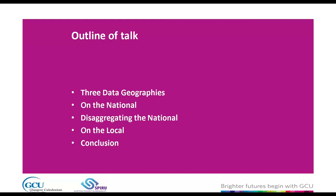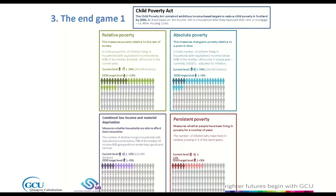Hannah mentioned that the driver behind local action reports is the Child Poverty Act 2017, which sets four targets. What we don't have is local data that allows us to measure three of those four targets. We don't have local data to measure absolute poverty, combined low income and material deprivation, or persistent poverty. With relative poverty, I'll say a little more, but as Hannah says, the objective is not that we locally measure all four targets over the next decade as we move towards 2030.